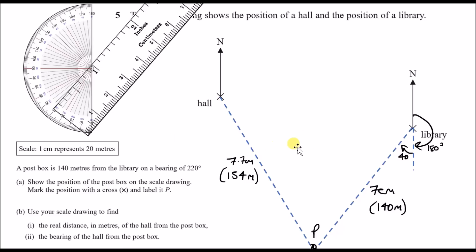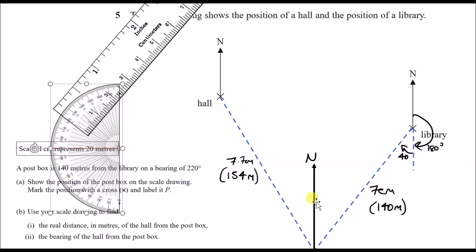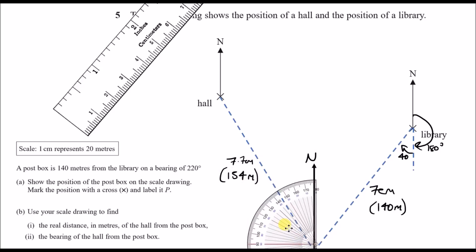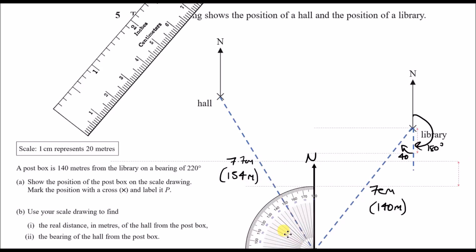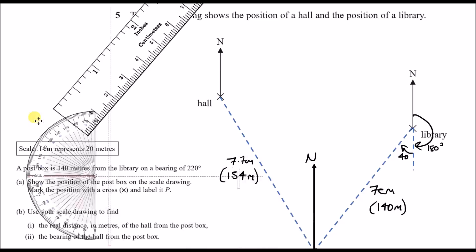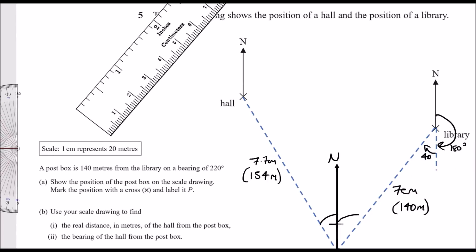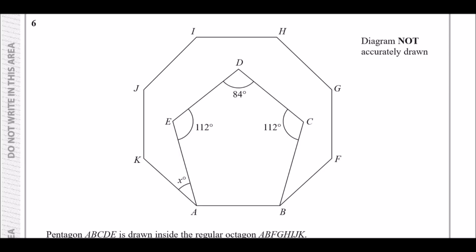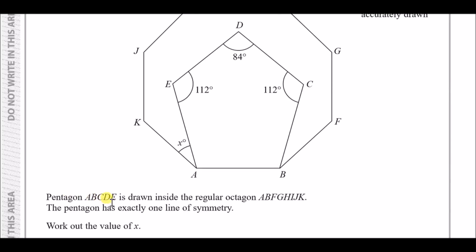For part C, find the bearing of the hole from the post box. Draw a north line at the post box, then measure the clockwise angle to the hole. The angle between the line and 180 degrees is 30 degrees, so going all the way around clockwise it's 360 − 60 = 300 degrees. The bearing is 300 degrees.